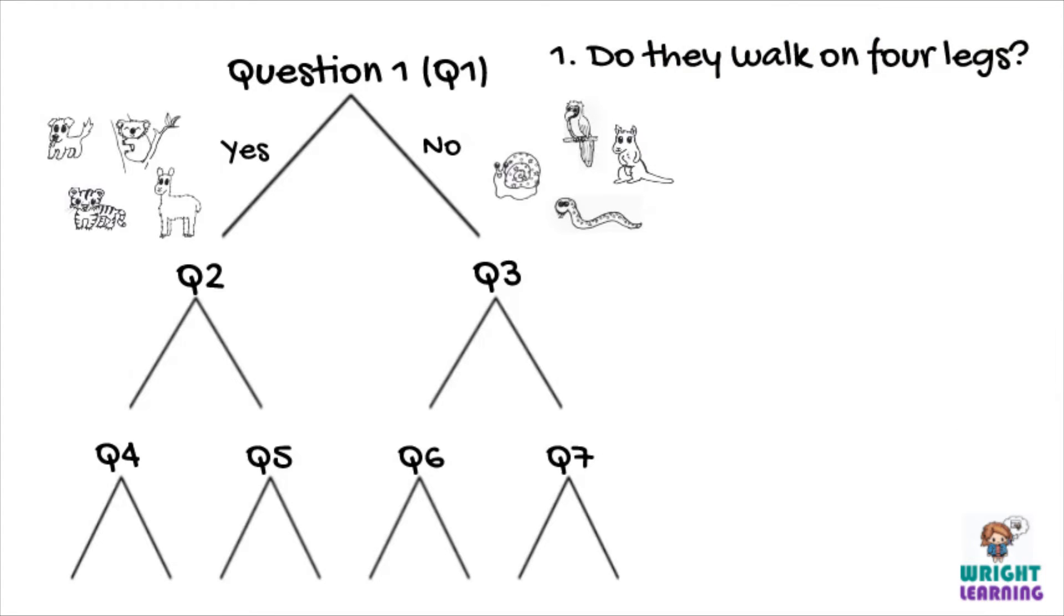To continue working on the written dichotomous key, we need to tell the person trying to identify an organism what to do next. See how the branch of the tree diagram links to question 2 for organisms that do walk on four legs? So we write under question 1, if yes, go to question 2.